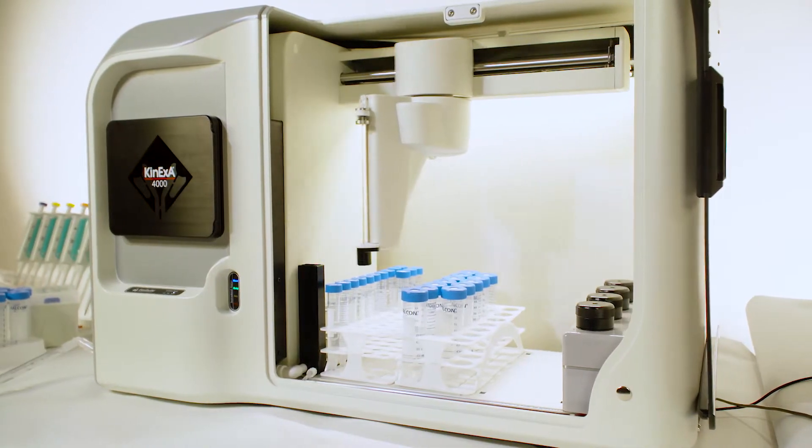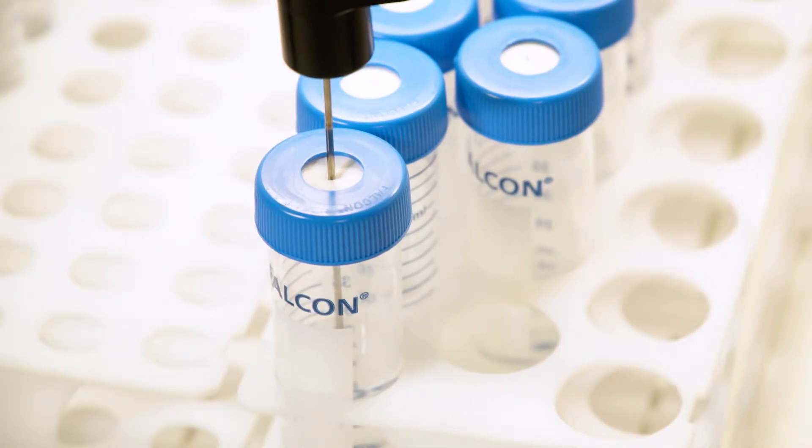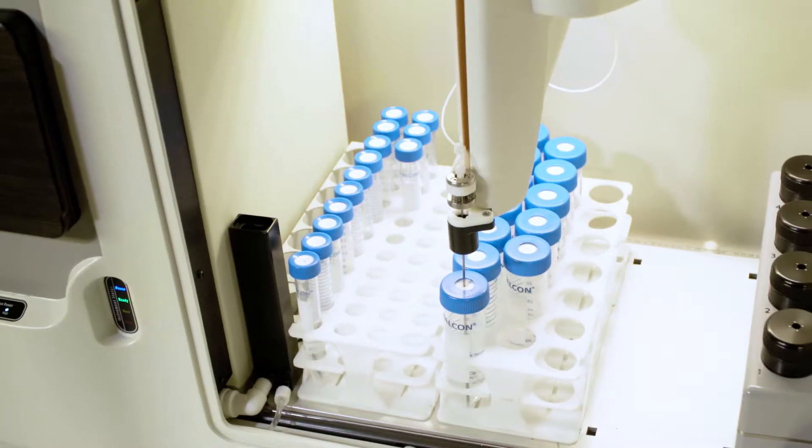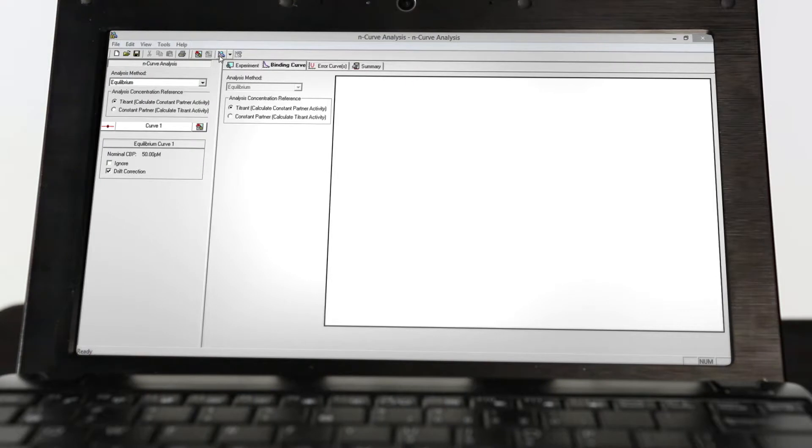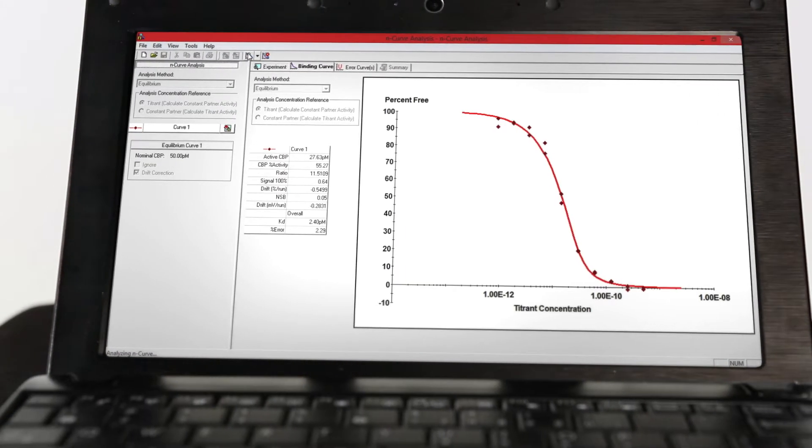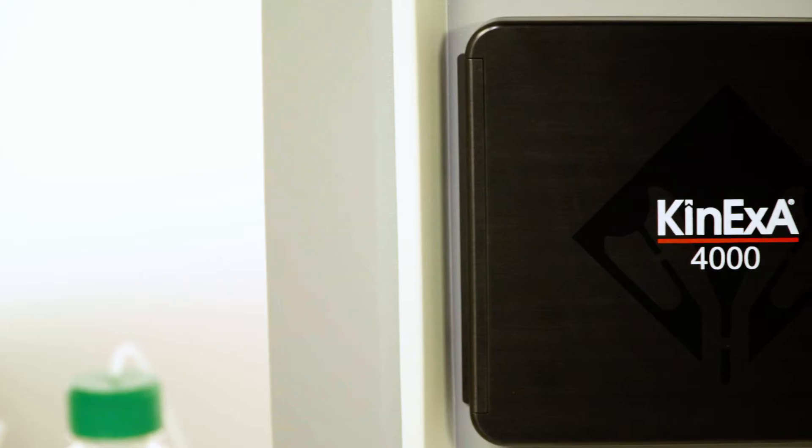Next, the samples are left to equilibrate. Once equilibration is reached, the samples are placed on the instrument, run autonomously, and then the data is analyzed with a single click, which includes 95% confidence intervals.